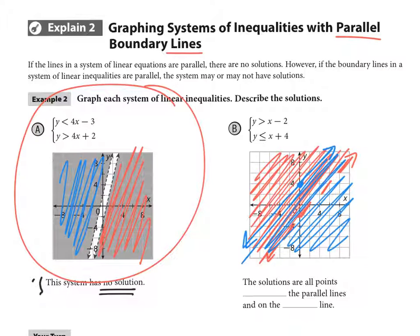On this one, there is a shared area. And that's this kind of section in the middle. So this section in the middle is where the solution is. Because even though these lines are parallel, the shading areas do overlap. So this does have a solution. And it's the section between the parallel lines. So make sure that you understand parallel does not always mean no solution if you have inequalities and shading.